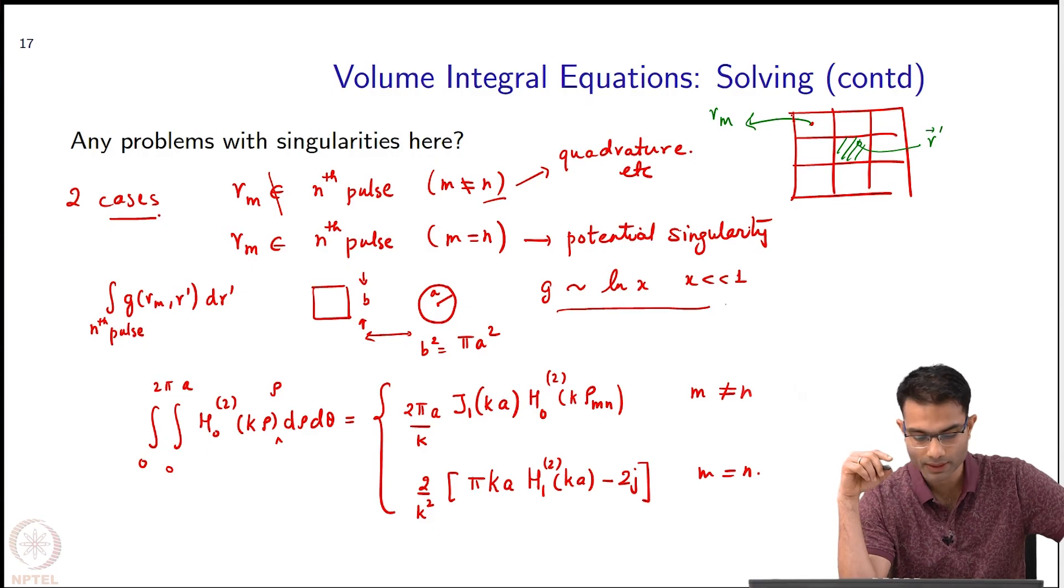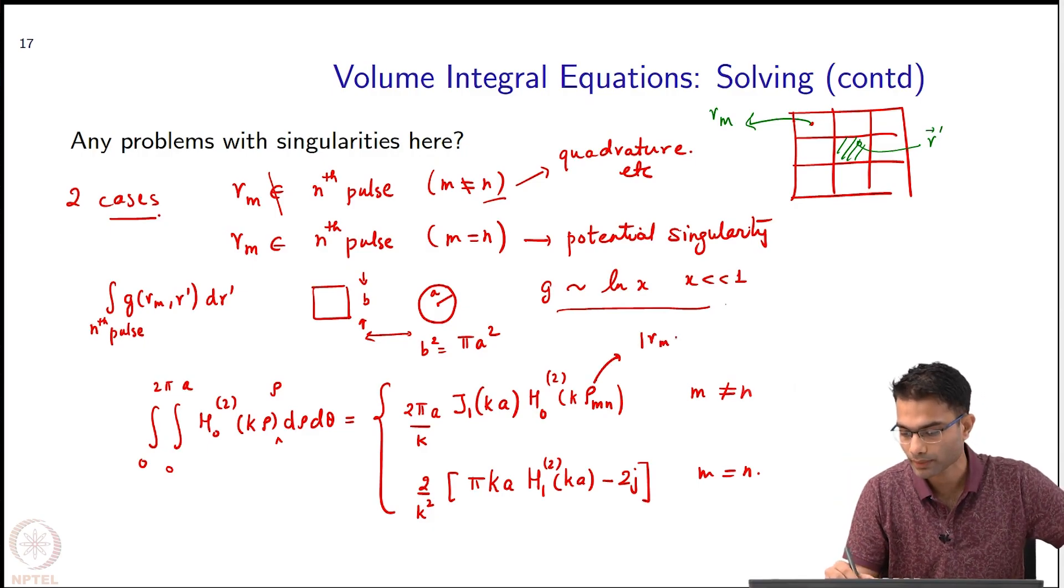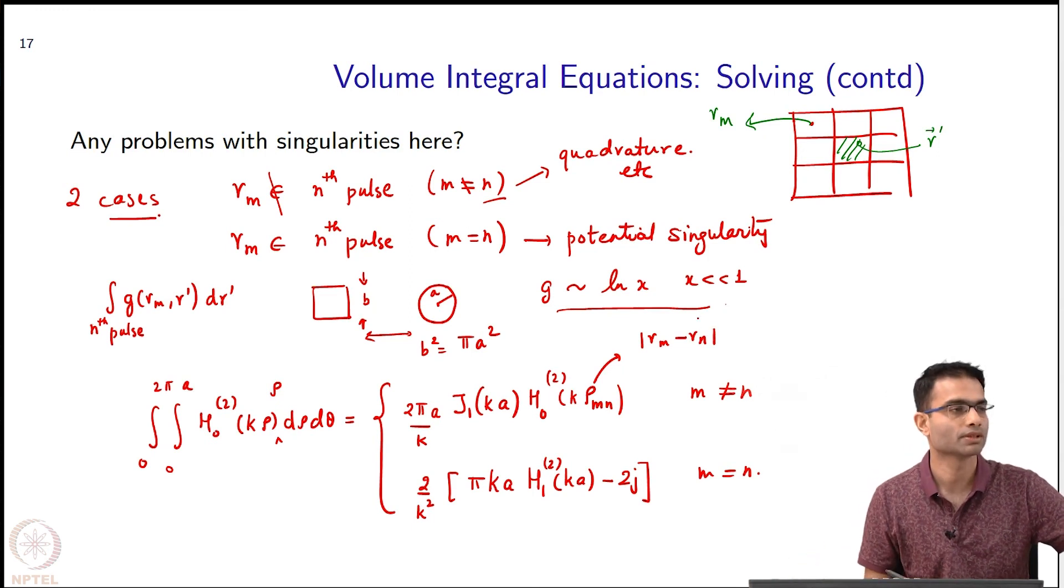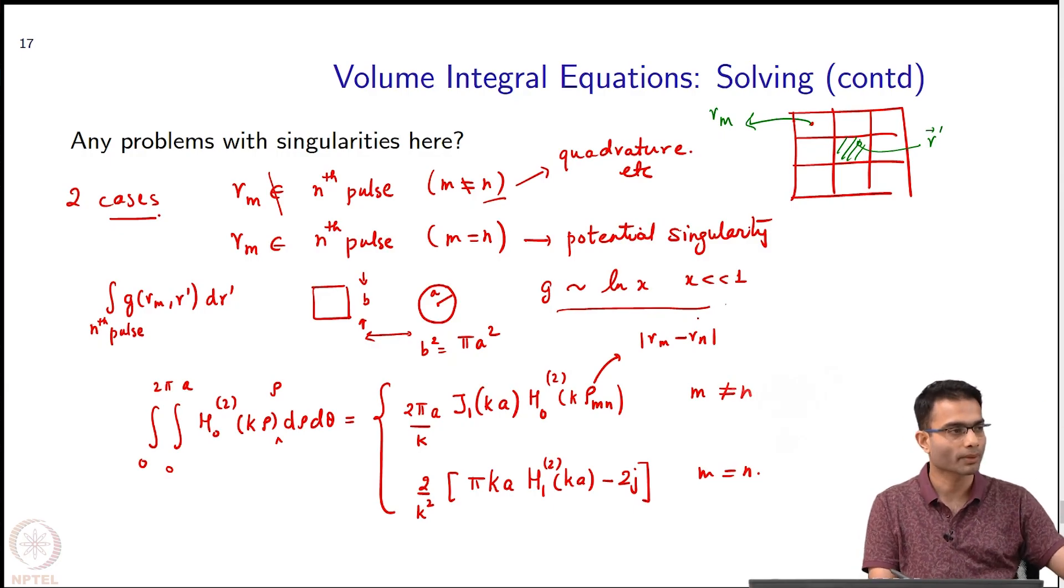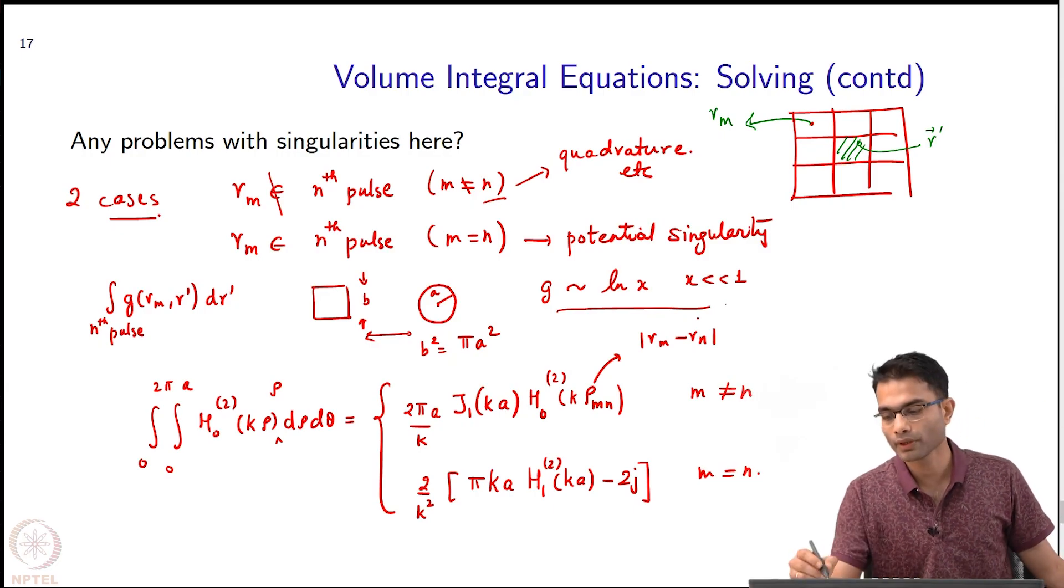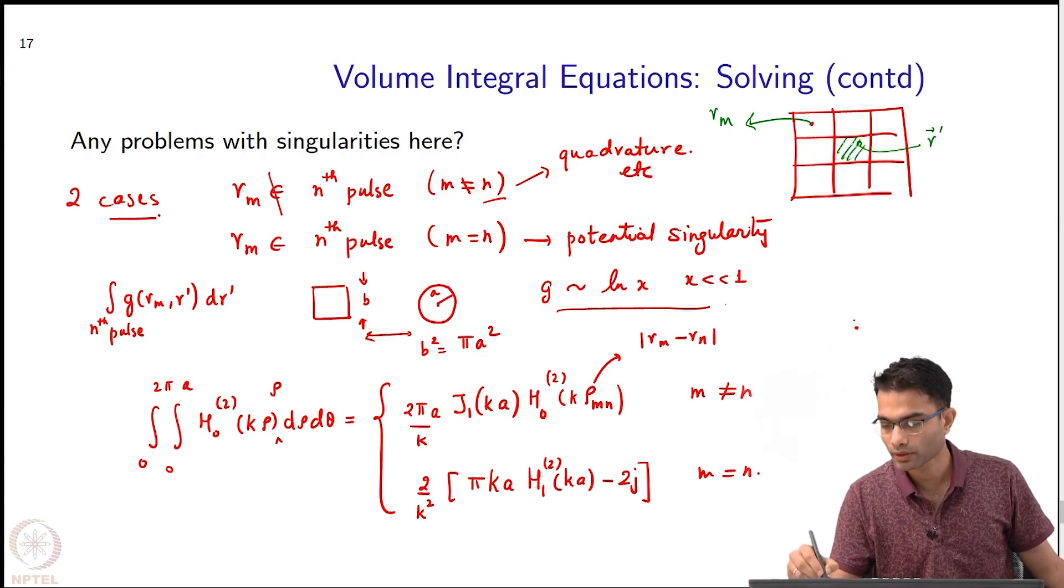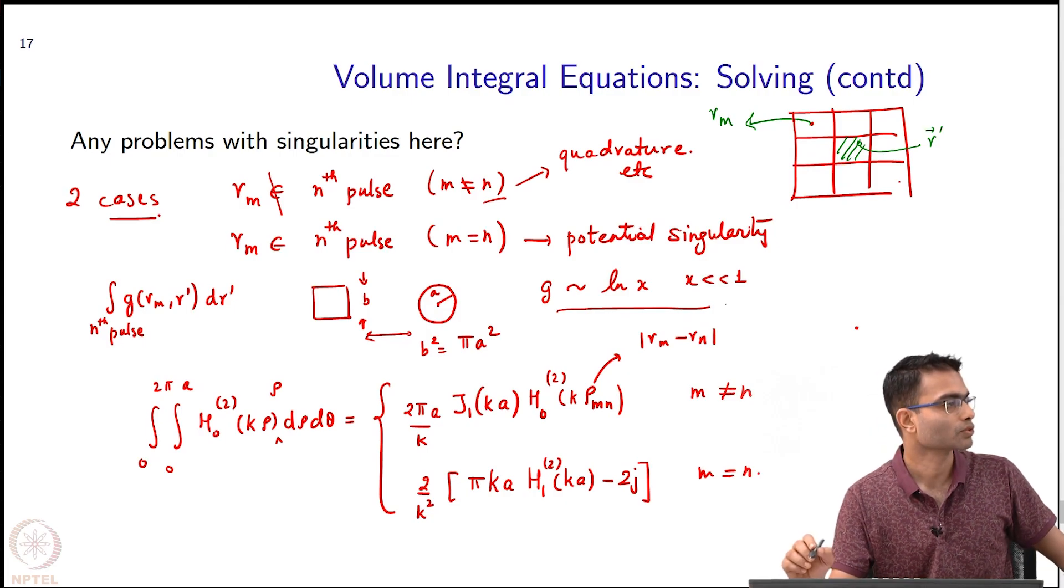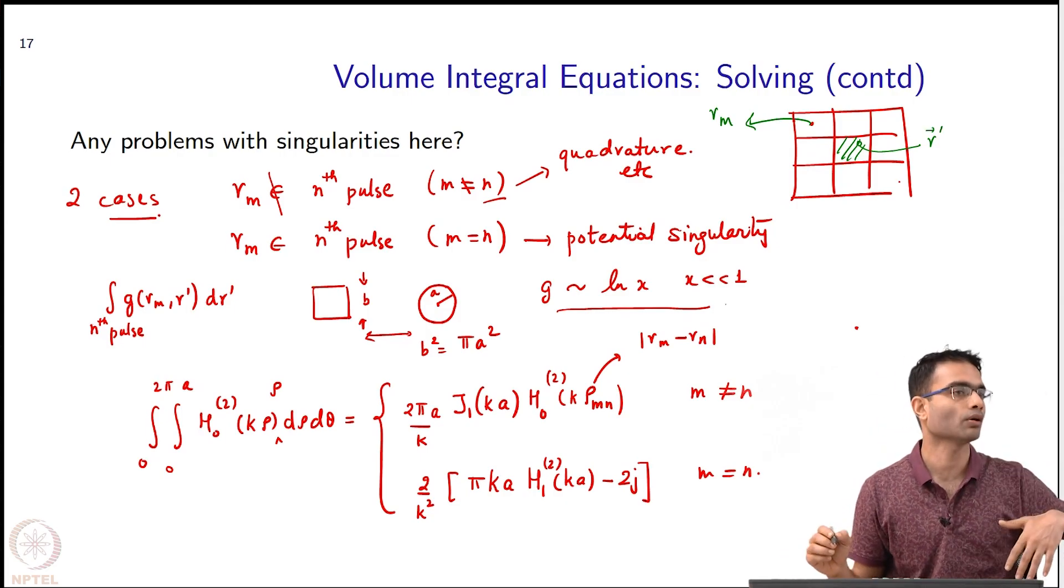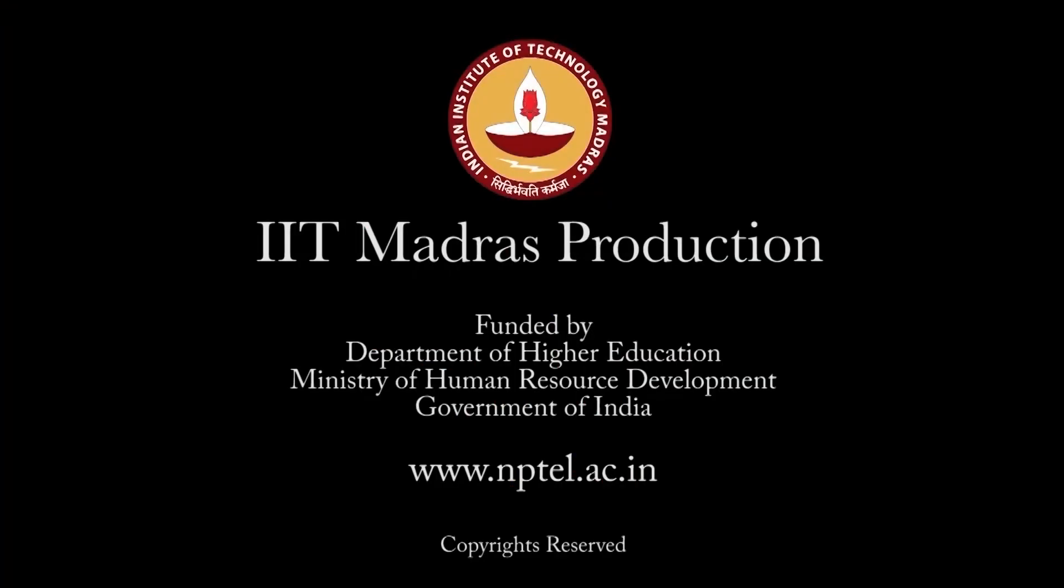So ρ_mn - ρ_mn is the distance, yeah. So ρ_mn is r_m minus r_n, the distance between the centers of the squares or circles. That is ρ_mn, right. So what are we doing? We take one guy fixed, integrate over all of these pulses, right. So I get one equation. Repeated for all 9 testing points, I get 9 equations, 9 variables.